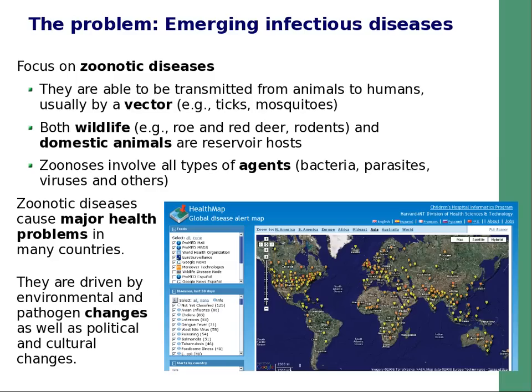There is an increasing problem of emerging infectious diseases in the world. Here I want to focus on zoonotic diseases — usually vector-borne diseases transmitted by ticks, rodents, or mosquitoes. Notably, wildlife and domestic animals are the reservoirs for these diseases.